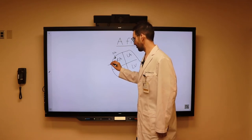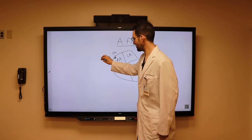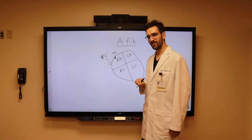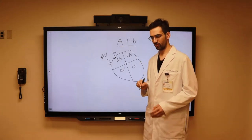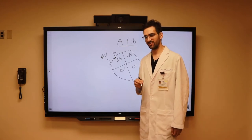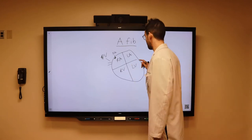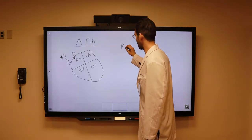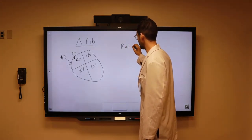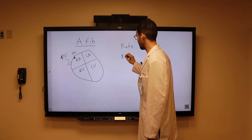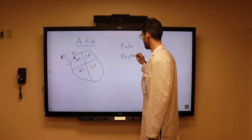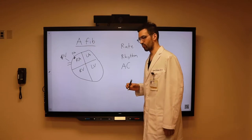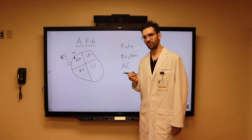Classically, this is going to originate from the pulmonary veins, abbreviated as PV. This is ultimately going to result in an irregularly irregular rhythm, and this is ultimately what characterizes atrial fibrillation. Throughout this video, we are going to discuss the management of atrial fibrillation in detail, and there are going to be three major categories at our disposal: rate control, rhythm control, and anticoagulation, which we will discuss using the CHADS2-VASc score.